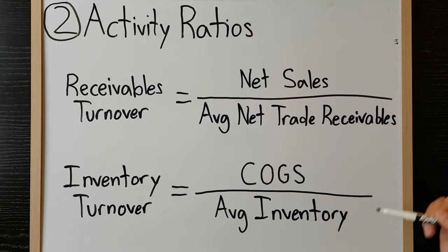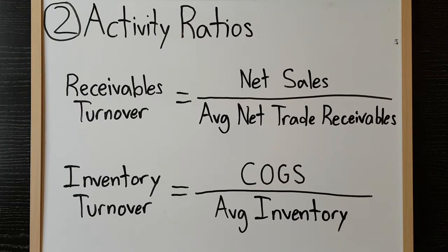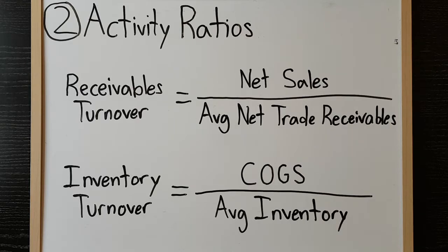Average receivables and average inventory can be calculated simply by adding the opening balance and the closing balance for the period and dividing by two. These ratios can be modified to express turnover as the number of days it takes to turn over the balance, rather than the number of times per year turnover occurs. This is accomplished by taking 365 and dividing by the previously calculated ratio.